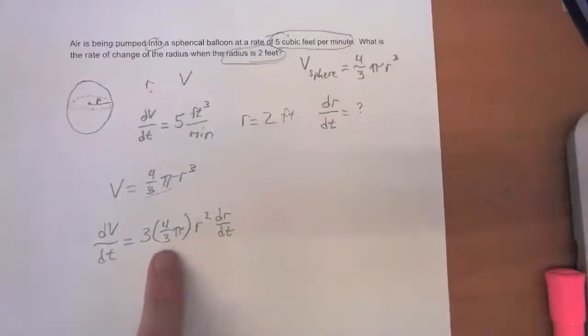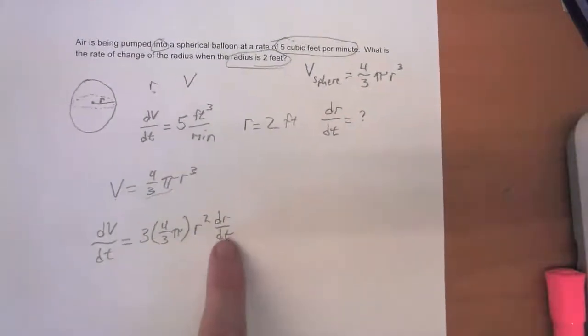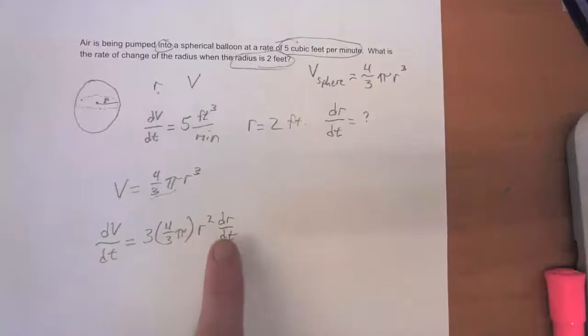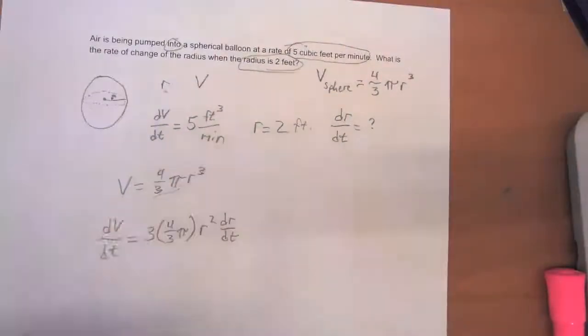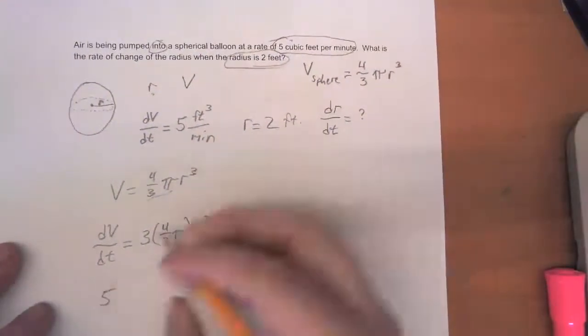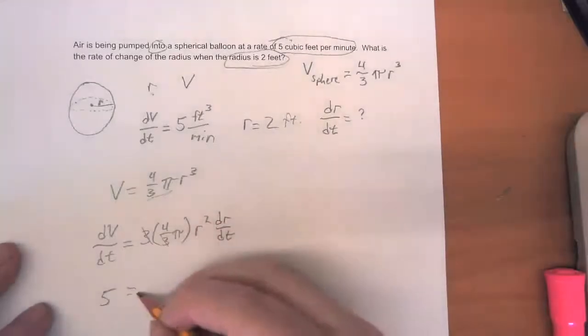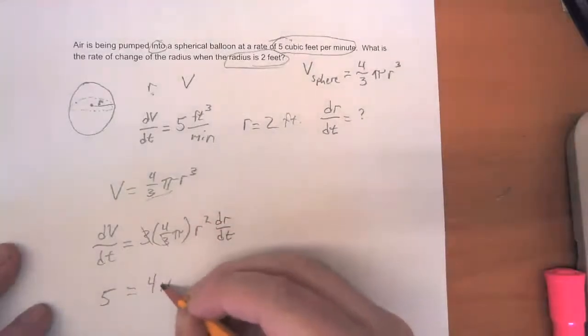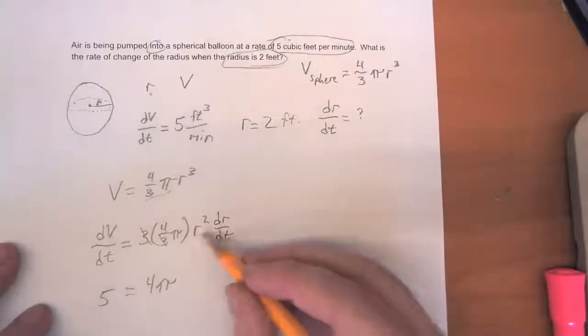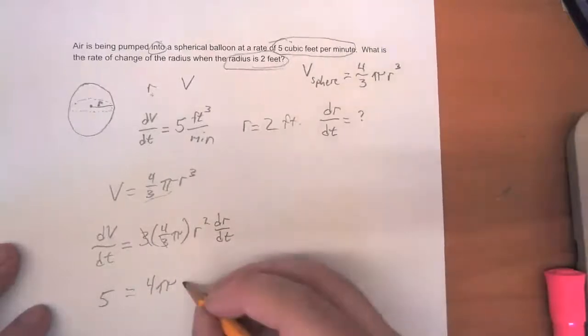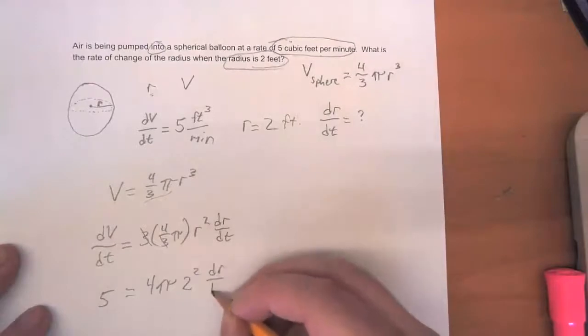Now we have enough information to solve the problem. We want to calculate what dr/dt is. We're given that dV/dt is equal to five. Those threes cancel each other out is equal to four pi times r squared. We're given that r is two times dr/dt.